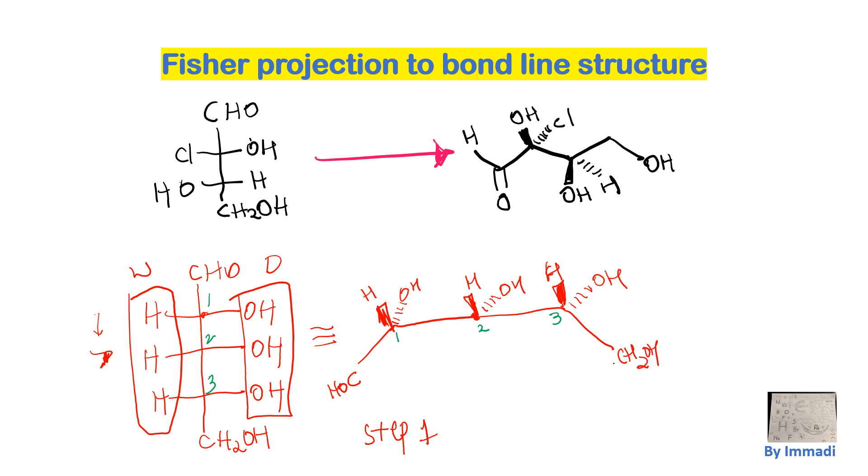So now what we are going to do is we're going to keep it stay and this will be flipped. And then this will stay. So this is how you're going to get converted into the bond line structure. So when I do the bond line structure, so this is going to be COH.